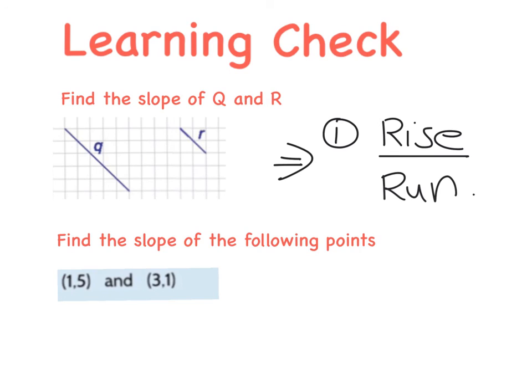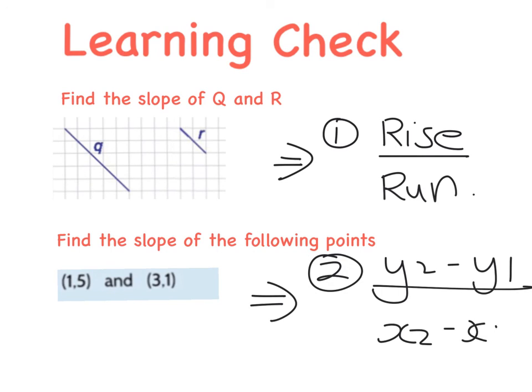And number two: find the slope of the following points, (1, 5) and (3, 1). For that one, you're going to be using your second method, which is your y₂ minus y₁ all over x₂ minus x₁ formula.